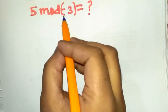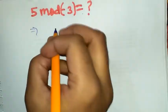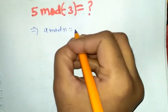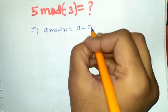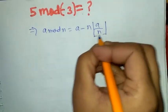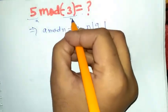We have to find the value of 5 mod minus 3. The general formula is a mod n equals a minus n times the floor value of a by n. So let's put this: a is 5 and n is minus 3.